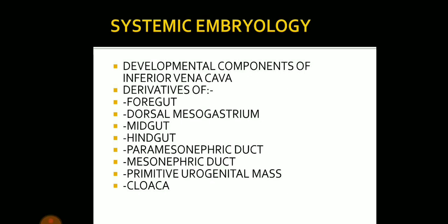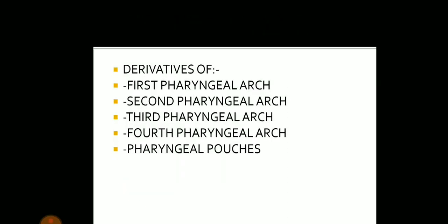Questions can come on developmental components of the inferior vena cava in case of systemic embryology. Derivatives of foregut, dorsal mesogastrium, midgut, and hindgut are very important. Questions can also come on the derivatives of paramesonephric duct, mesonephric duct, primitive urogenital mass, and the cloaca. These are very important.